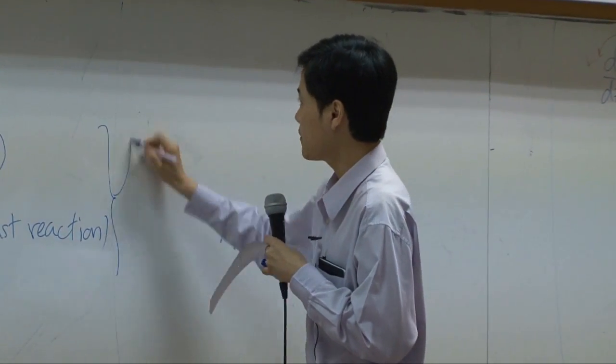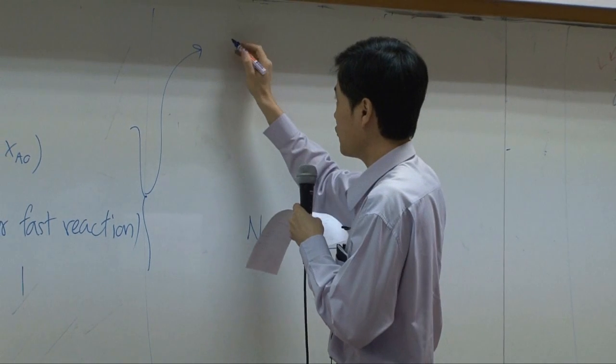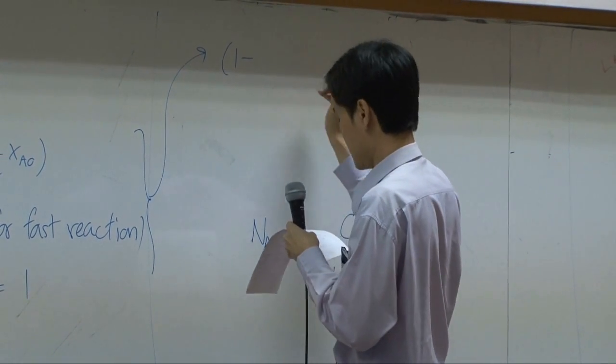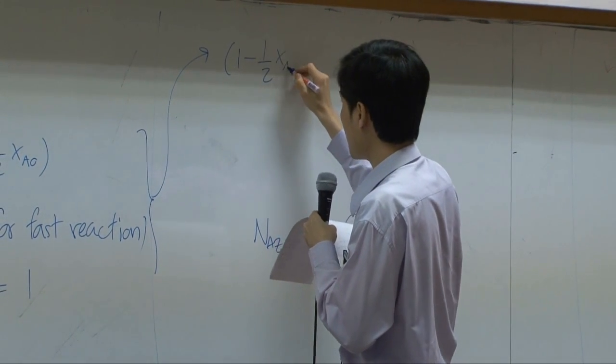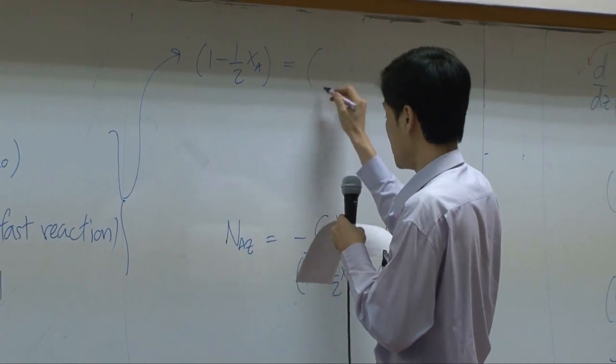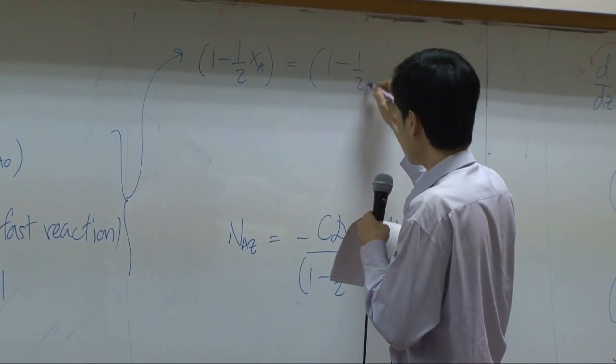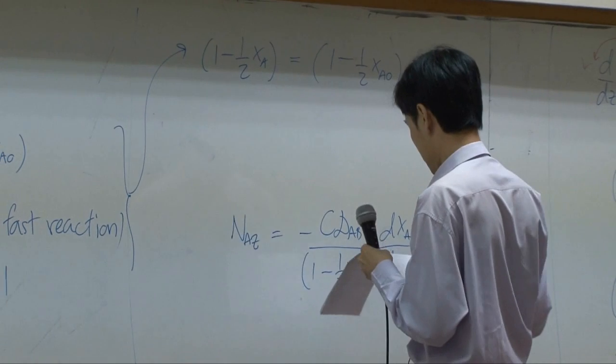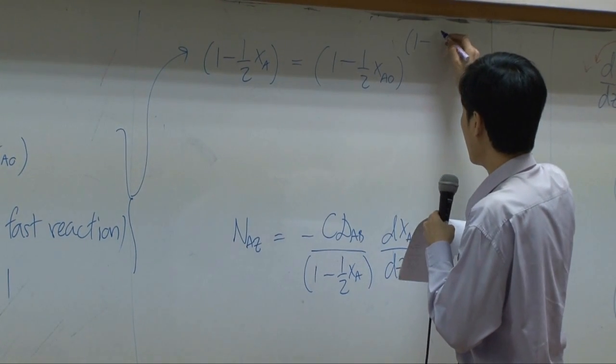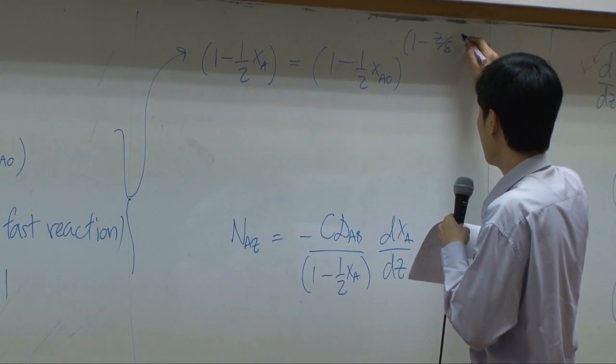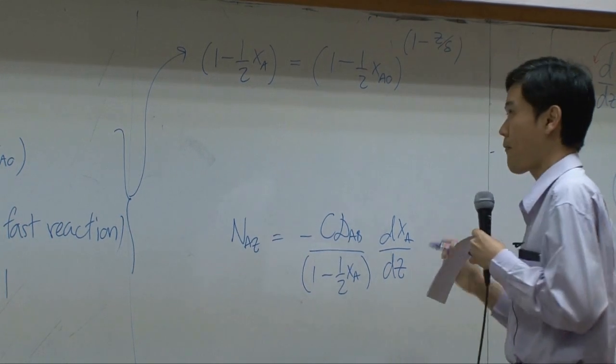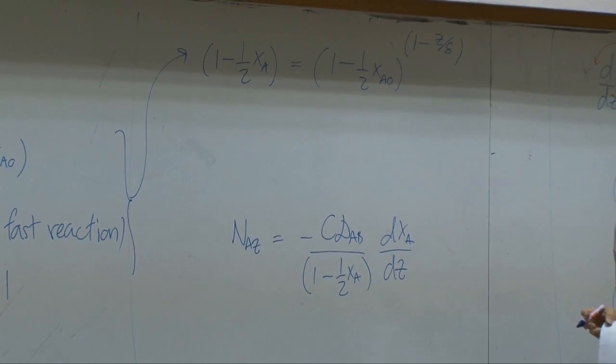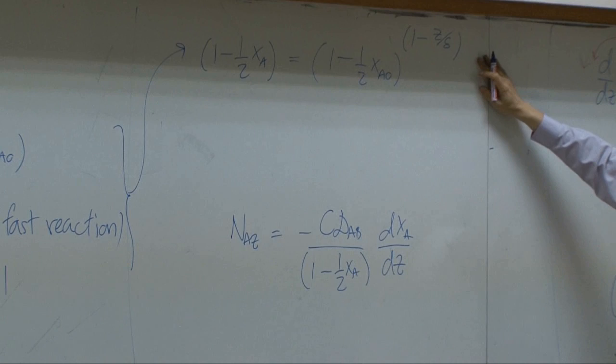So from here, you will have 1 minus half XA equal to 1 minus half XA0 to the power of 1 minus Z over delta. That's our concentration profile.